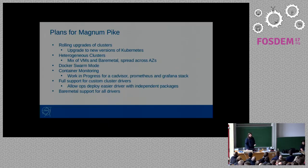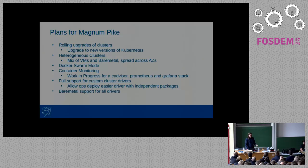OpenStack has two releases per year. The next release is in two weeks. These are the plans for Pike, the next release in August. We want to manage upgrades of clusters — either upgrade Kubernetes only, or upgrade the Docker underneath. We plan to do it as rolling upgrades with node replacement.